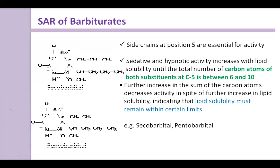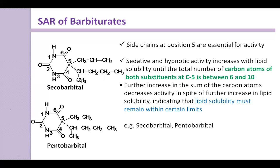Examples are secobarbital and pentobarbital. Secobarbital has a total number of carbon atoms at the C5 substituents of 8, and pentobarbital has 7. Secobarbital is more active because it contains a greater total number of C5 substituents compared to pentobarbital.